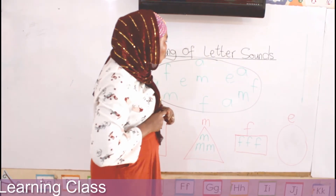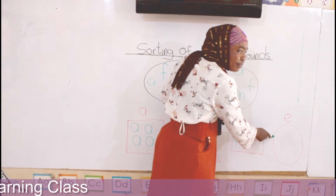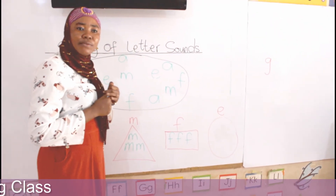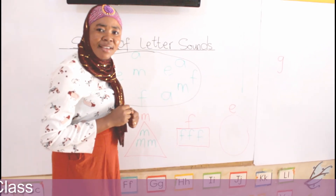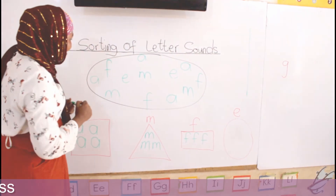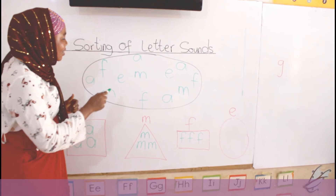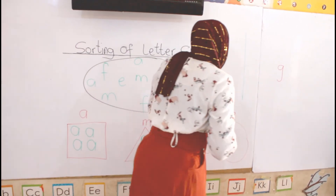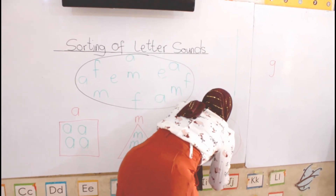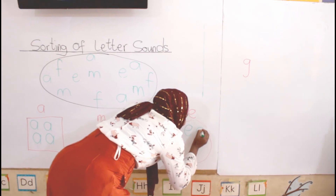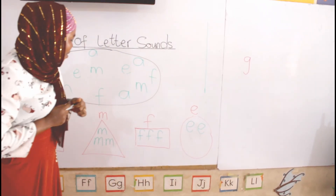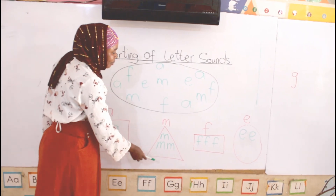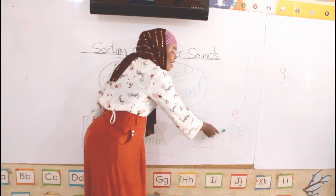Now we have the last one, which is the circle. Let's look on top of the circle. We have some letter sound there. What is the name of that letter sound? E. E. So now let's count the oval — let's count the number of E's in the oval. One, two. Very good. Now let's write. You write, then you say it. E. Very good. So now let's say it again — A, M, F, E. Super.